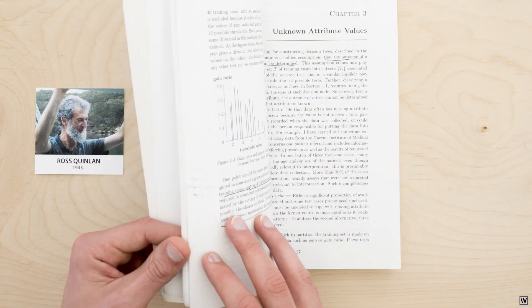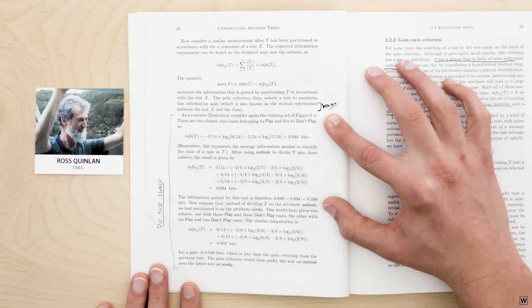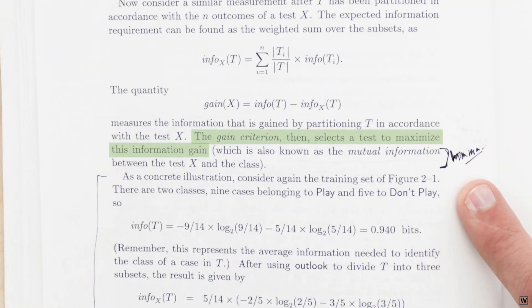Borrowing from the pervasive field of information theory, Quinlan chose to measure the information gained by each possible split, and choose the split with the greatest gain. Now we must be careful here. Like most scientific terms, the word information used in the context of information theory has a narrow and technical definition that is only marginally related to the way you or I may use the word in conversation.